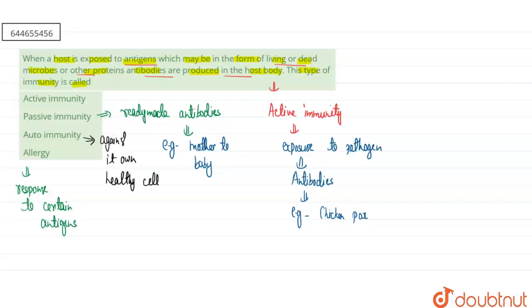So our correct answer of this question will be the first option, that is active immunity, is the type of immunity in which antibodies production will occur inside the host body after the exposure to the pathogen. I hope this answered your question. Thank you.